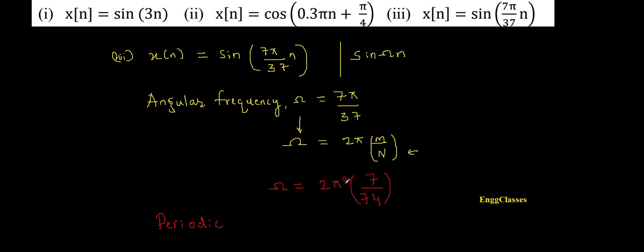The fundamental period N in this case is going to be 74. So the final answer is: the given signal is periodic with its fundamental period equal to 74. If there are any doubts, please let me know in the comment section — I'm happy to answer. Thank you so much for watching!